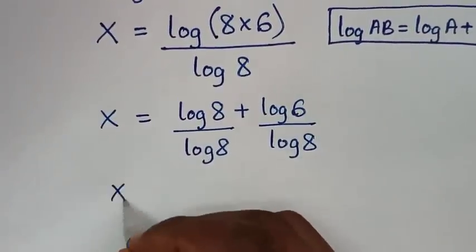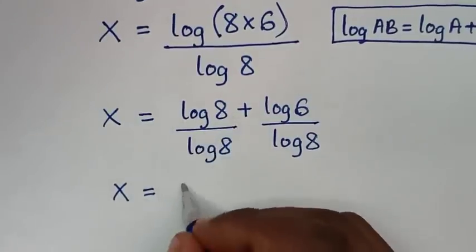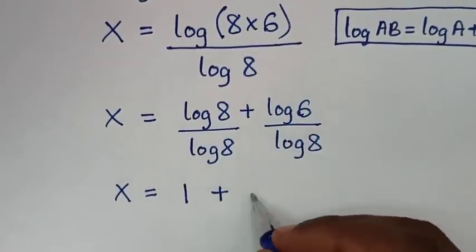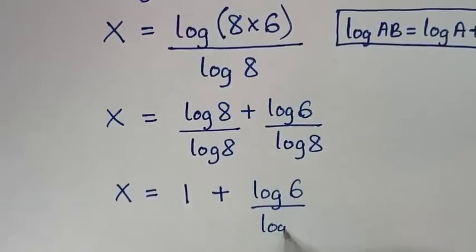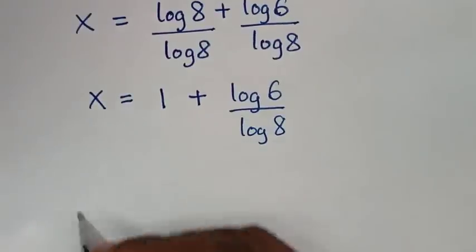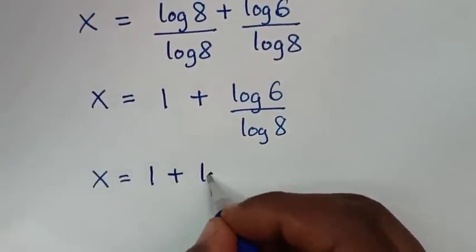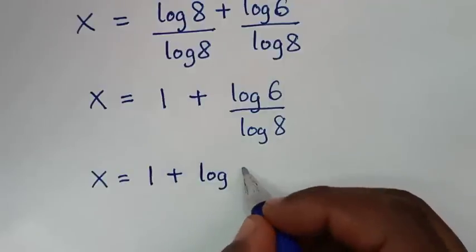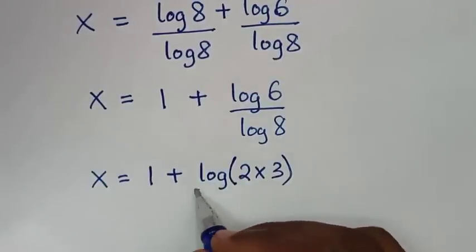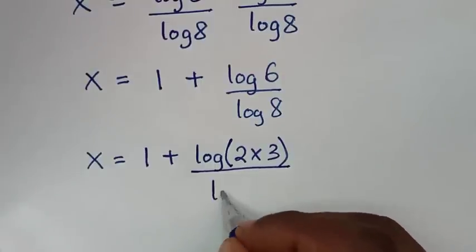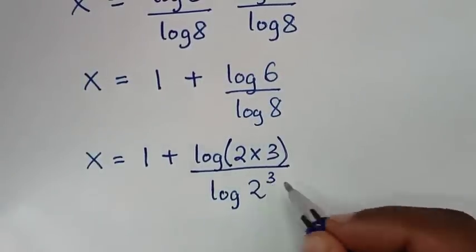Then in the next step, x is equal to log of 8 divided by log of 8, which is 1, plus log of 6 over log of 8. Now 6 is the same as 2 times 3, and 8 is the same as 2 power 3.